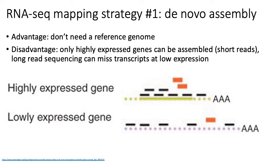Similar to the whole genome assembly problem, de novo assembly relies on very high coverage of all the transcripts you're trying to rebuild. Typically in practice you can only really build the highly expressed genes, because those are the transcripts for which you have enough coverage to identify your contigs and rebuild your original transcript. In contrast, most of the poorly and even moderately expressed genes don't have high enough coverage to rebuild the entire transcript.